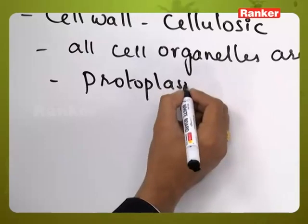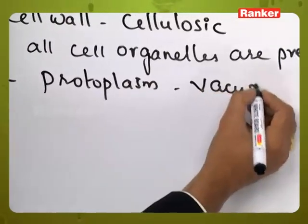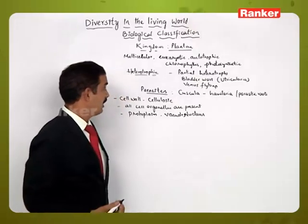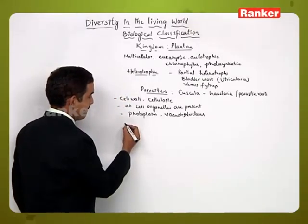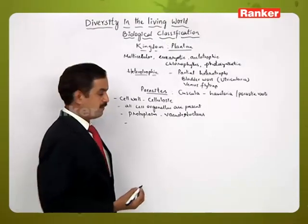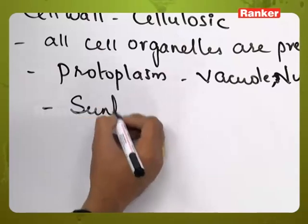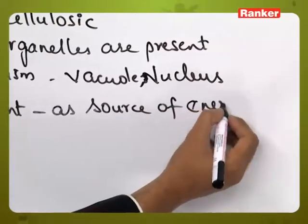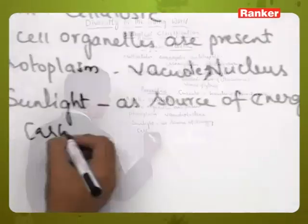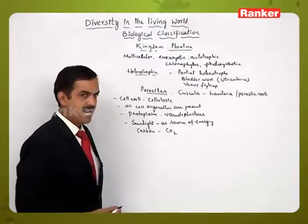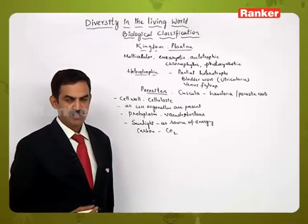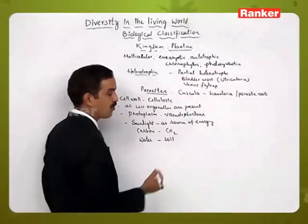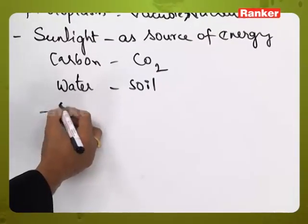They have protoplasm with a vacuole and nucleus in their organization. These individuals take up energy from sunlight and carbon from inorganic carbon dioxide. By using the chlorophyll molecule in the presence of sunlight and taking up water from the soil, they perform the photosynthetic process.